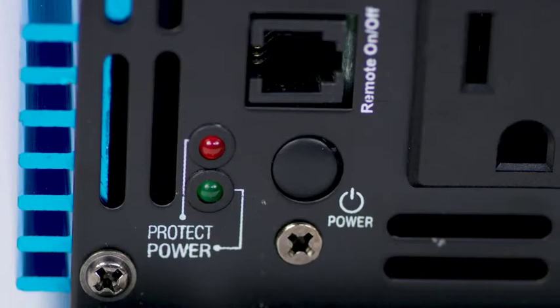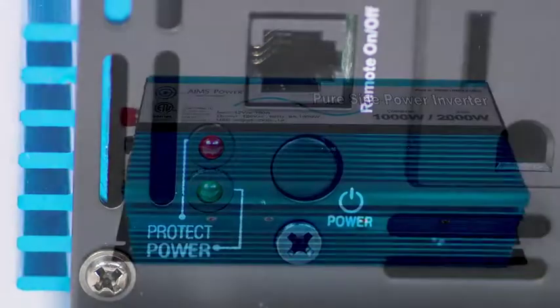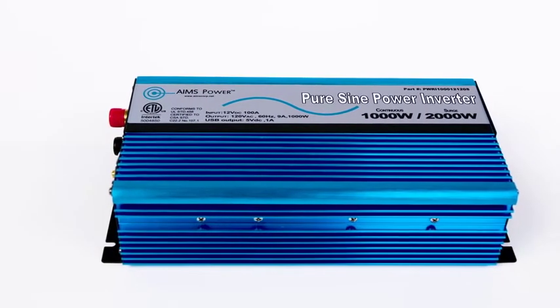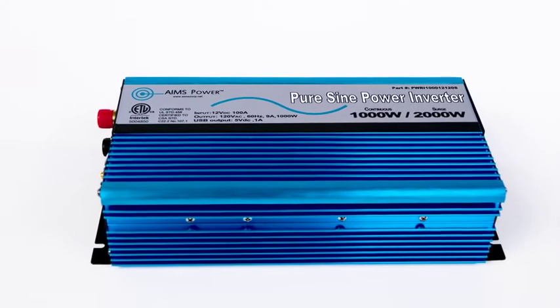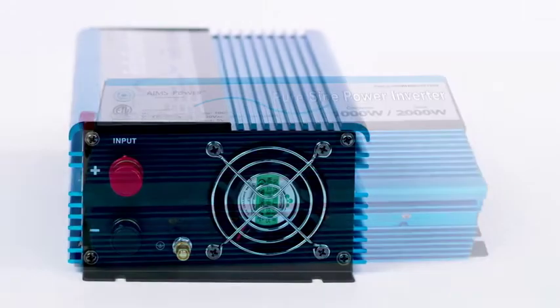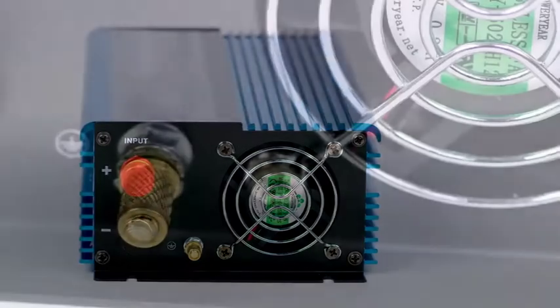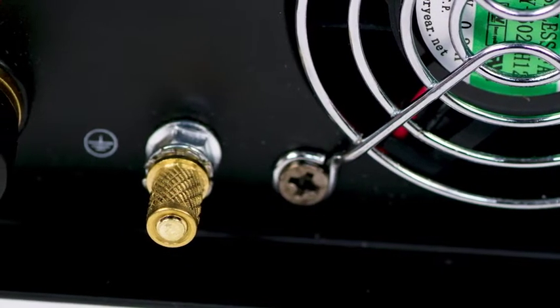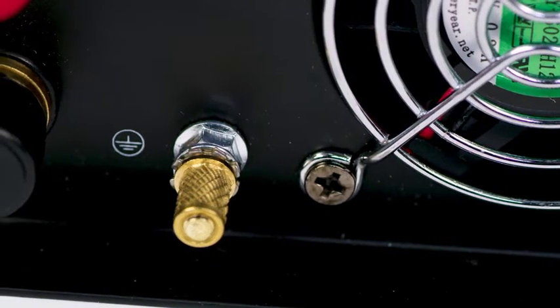The inverter has LED power and fault indicators and safety protections such as overload, short circuit, high and low voltage, and over temperature. It also features a grounding terminal that will prevent high voltage on the case of the inverter in the event of a short in the system.